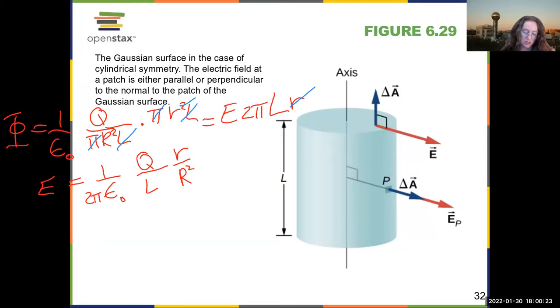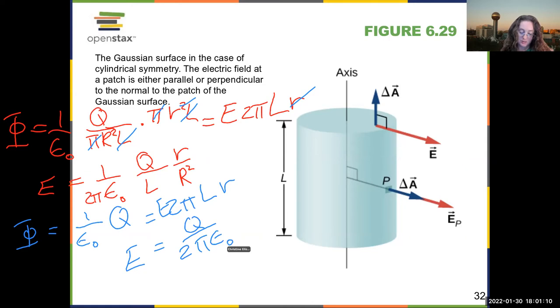Okay. Now, outside the sphere, I have 1 over epsilon naught q over 4 pi r squared. Well, sorry, actually, I'm enclosing the whole charge in this little segment, so I can just drop this and say q, and that is equal to 2 pi L r times e. So my electric field is q over 2 pi epsilon naught L r.